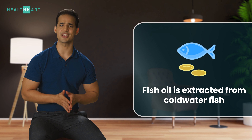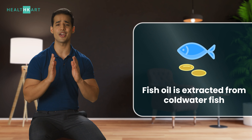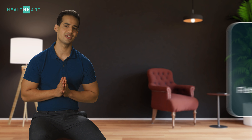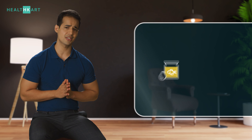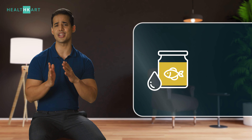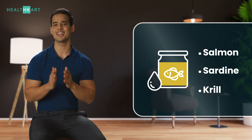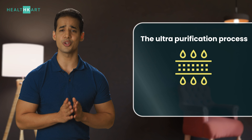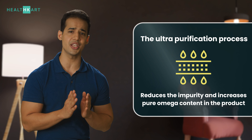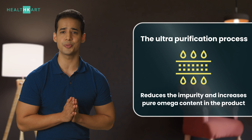Fish oil is basically extracted from cold water fish that have high omega content. The different types of omega depend on the type of fish, such as salmon, sardine, grill, etc. Fish oil is purified to get standardized omega content, either omega-3-6-9 or standalone omega-3. The ultra-purification process reduces impurities and increases pure omega content in the product.